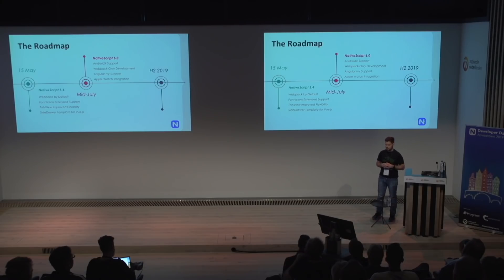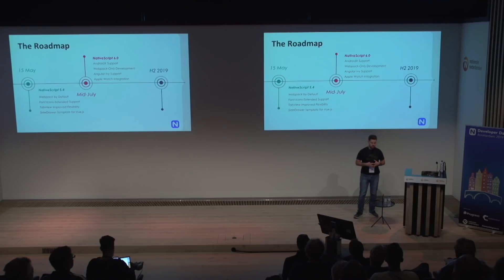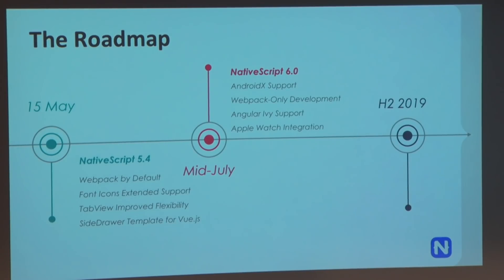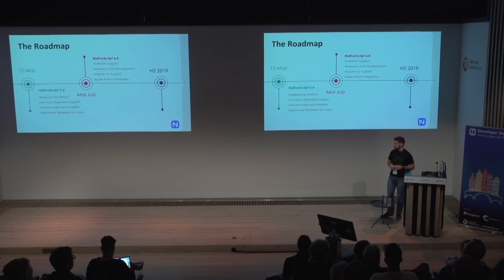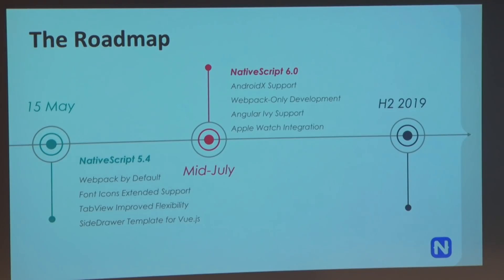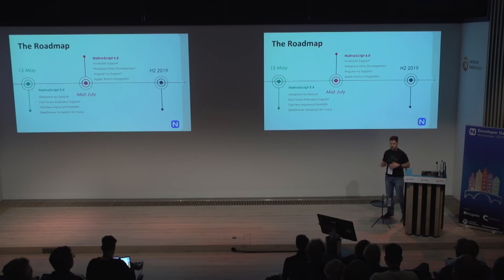The last thing for 6.0, which is equally important, is Apple Watch integration. With the previous release you may have noticed that we provided support for iOS app extensions — the iOS way to provide enhanced functionality for your application, like Today screen integration on your iPhone, or integration with the sharing widget. The next step in this journey is to provide integration with the Apple Watch as well, meaning your application will be able to interact with wearables. Most of these things are already in progress, so we have pretty good confidence we are going to deliver on them.